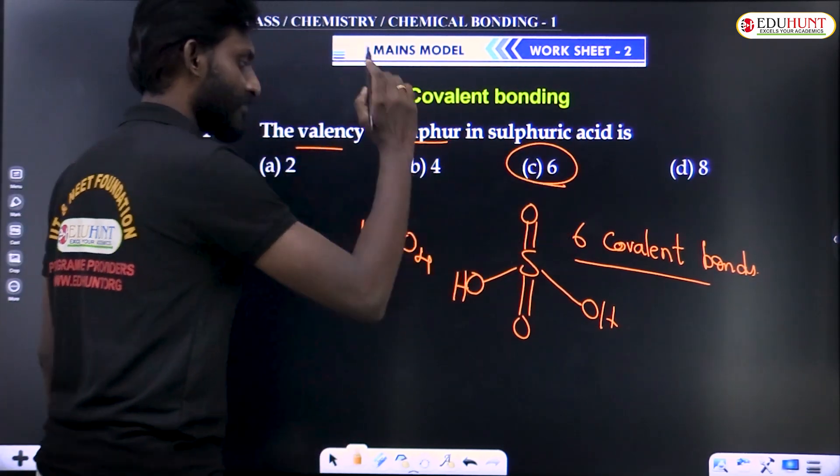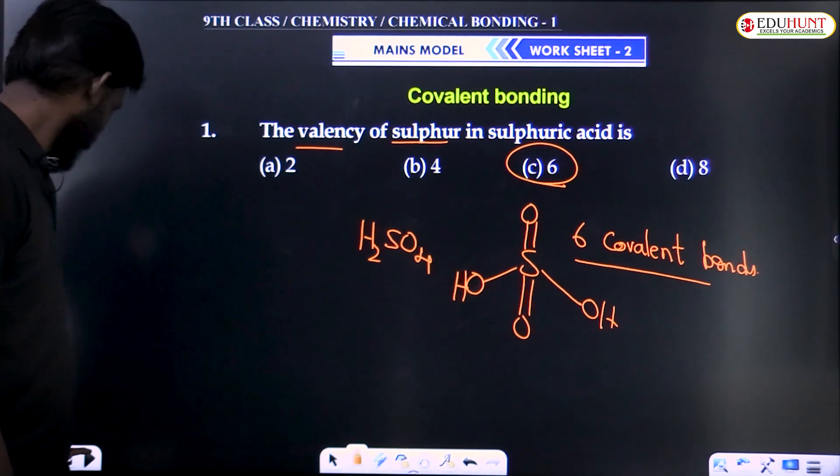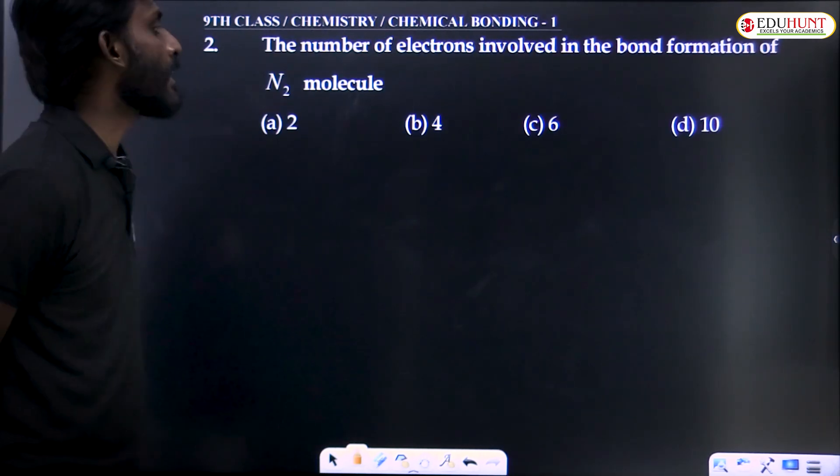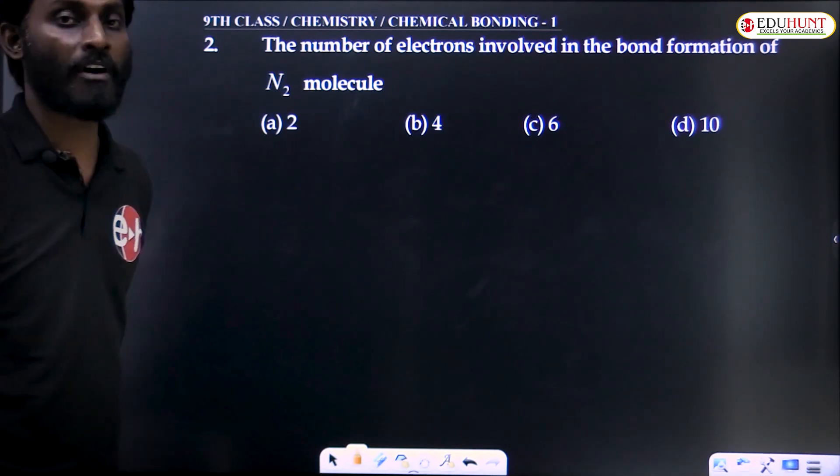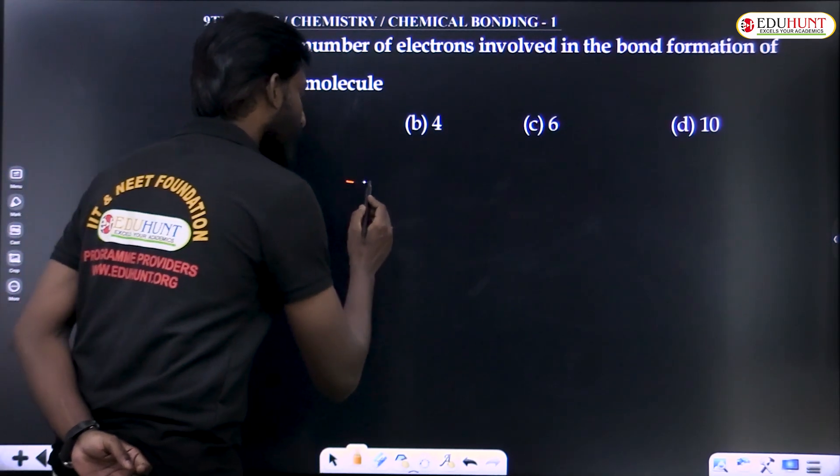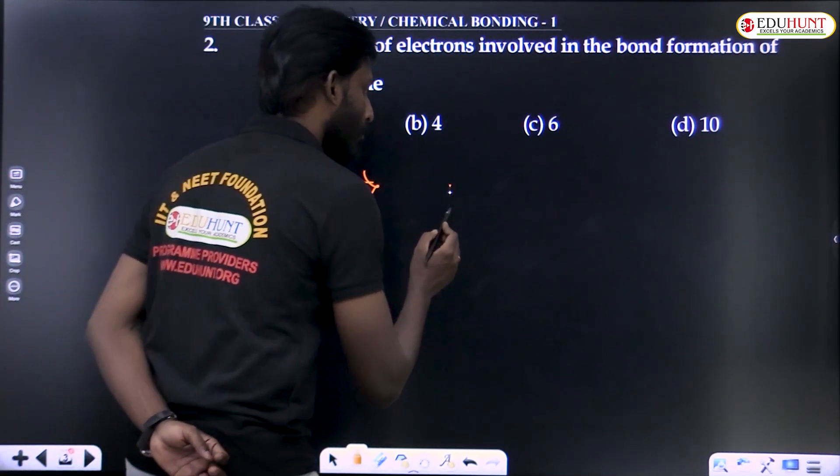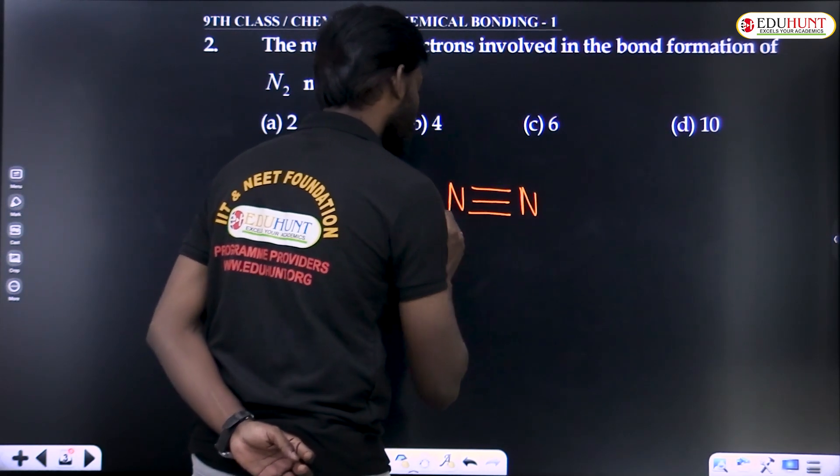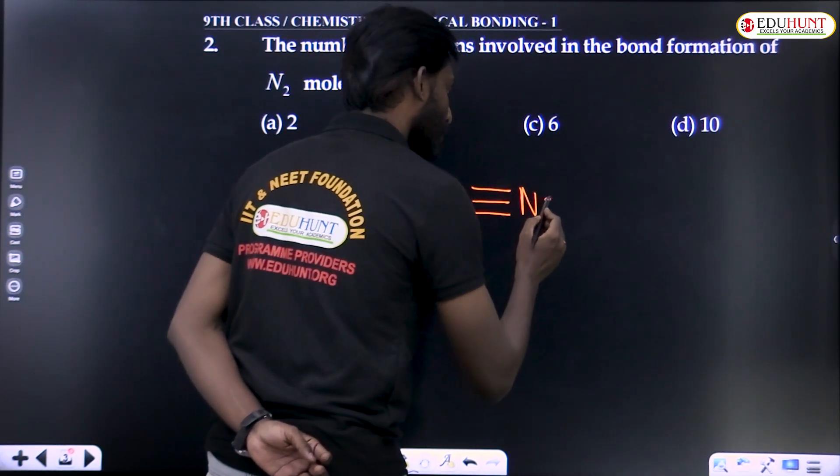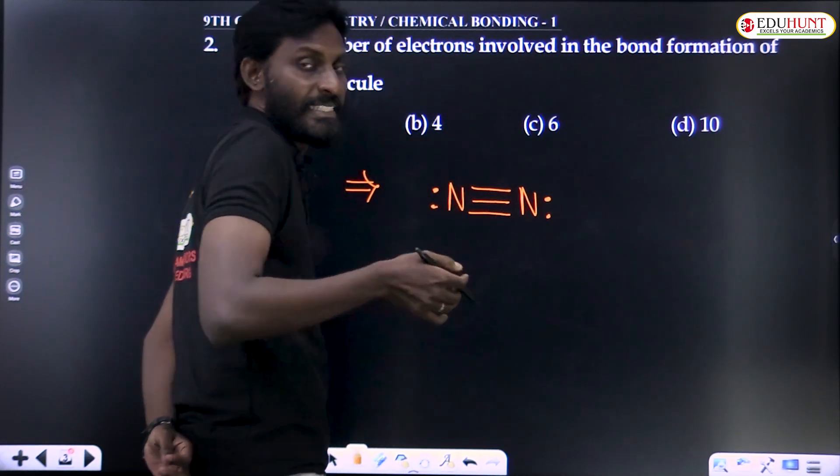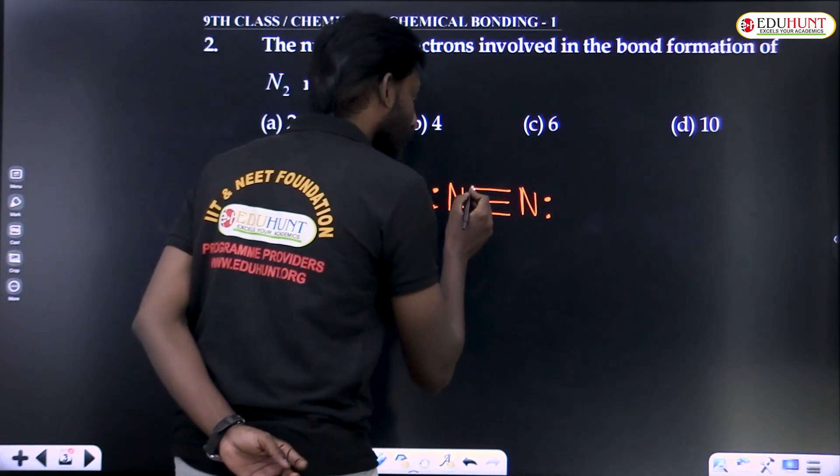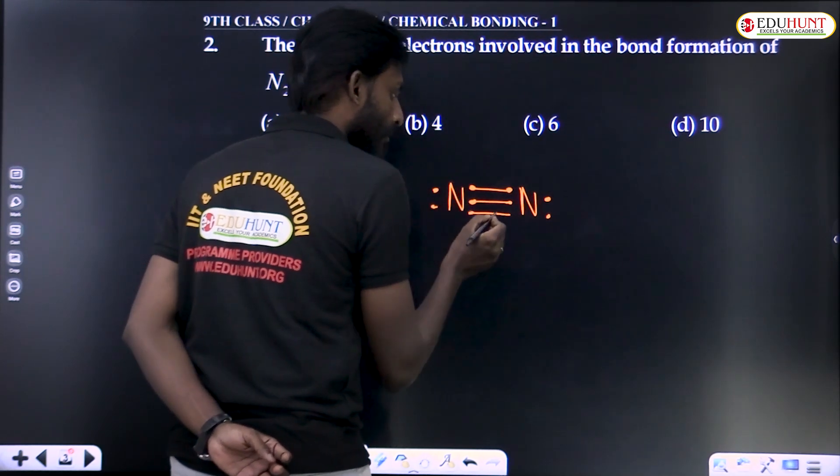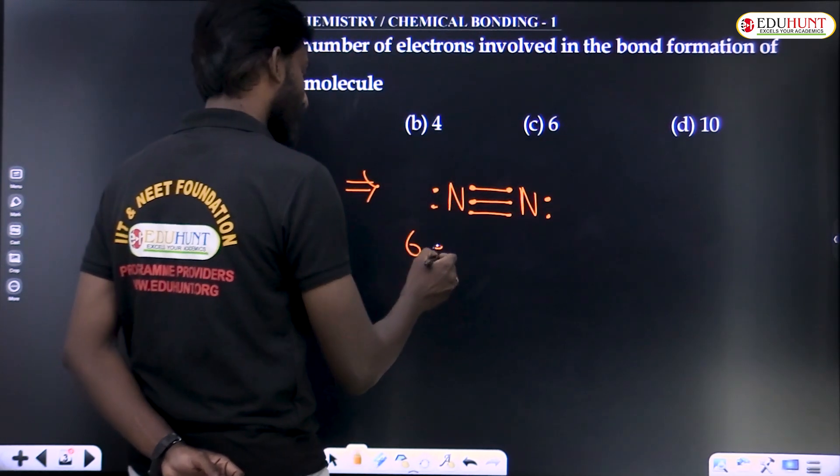Next, question number two. The number of electrons involved in the bond formation of N2 molecule. Immediately, the nitrogen molecule's Lewis dot structure you should propose. If I say it's a bond, bond means there is an electron pair. One, two, three, four, five, six. So total six electrons involved.